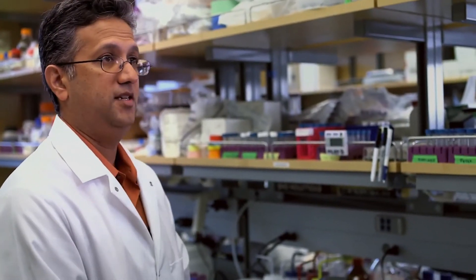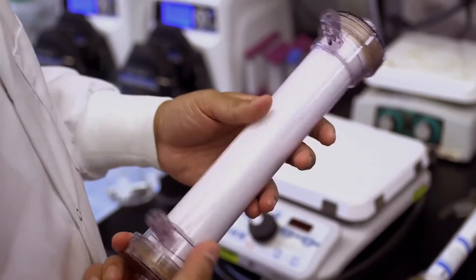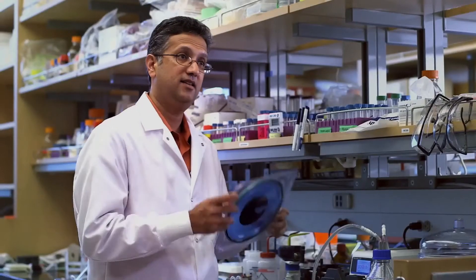So, a current dialysis machine is the size of a refrigerator, and the key component in that is a dialysis cartridge. There's about two square meters of surface area. To get the same amount of filtration, we need 1/20th in the silicon filter.